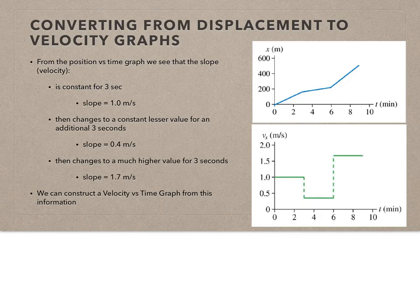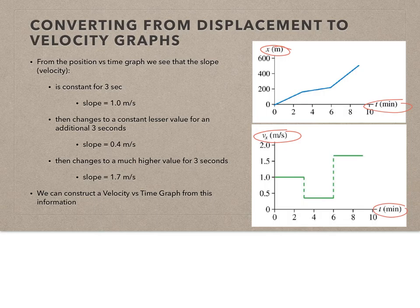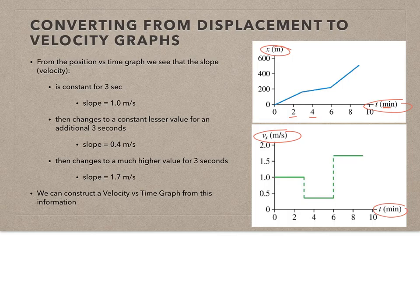Now we want to go from a position versus time graph to a velocity versus time graph. We can get velocity from the slope and the direction of travel. If I change the time units to seconds — so instead of two minutes, this is 120 seconds, 240 seconds, and so on — I can determine that the first interval has a slope of 1 meter per second, the second interval has a slope of 0.4 meters per second, and the third interval is 1.7 meters per second.